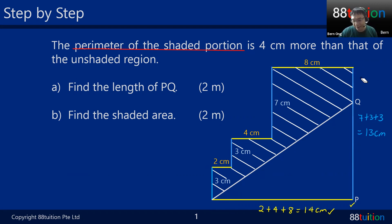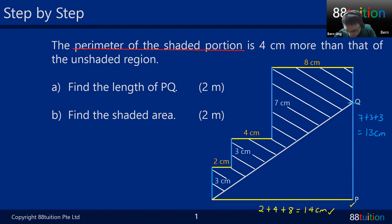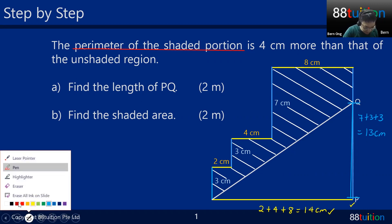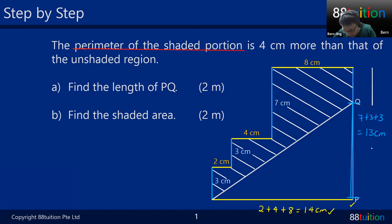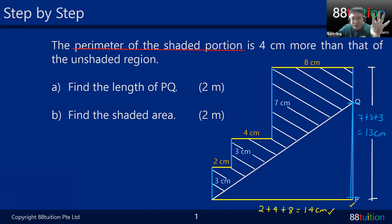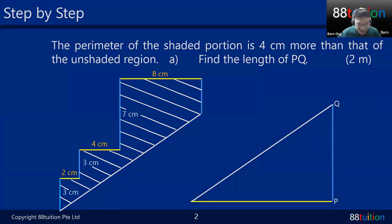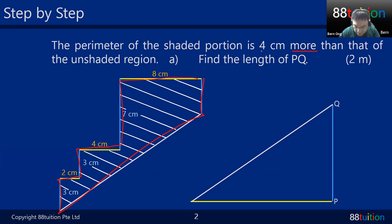We cannot use a ruler to measure — we need to find PQ mathematically. PQ goes from P up to Q here. The 13 cm is actually the whole length on that side. Be careful — the information must be very clear. For part B we need to find the shaded area. I'll split the figure into two parts. The perimeter of the shaded part runs here, here, here, here — and it's 4 cm more than the unshaded perimeter.